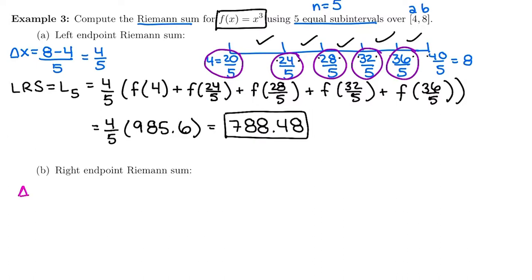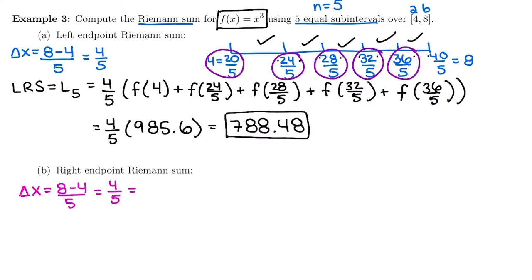So our right Riemann sum, we're going to start by calculating Δx again. It would still be 8 minus 4, b minus a over n, 8 minus 4 over 5. We still get 4/5, but this time I'll show you how to work with the decimal because if the fraction comes out to be a decimal that terminates or stops, then I would use the decimal. I think it's a little bit easier. So it's 0.8 for our decimal.